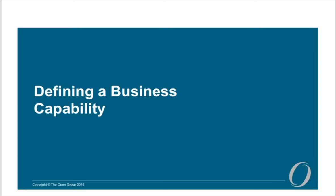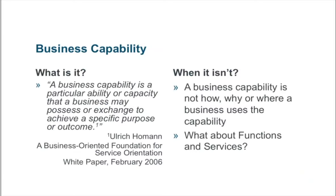Defining a business capability is an art of abstraction. We're trying to create some very high-level, enduring constructs that are not going to change for very long. We're going to go through a mechanism and process to help you do that by starting with defining an actual business capability. We're starting with a definition that's been around for almost a decade now, and the reason mostly for that is because it's been established for a long time and many people, including the Business Architecture Guild, are using this as the definition.